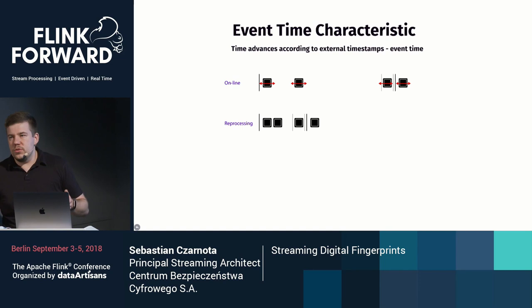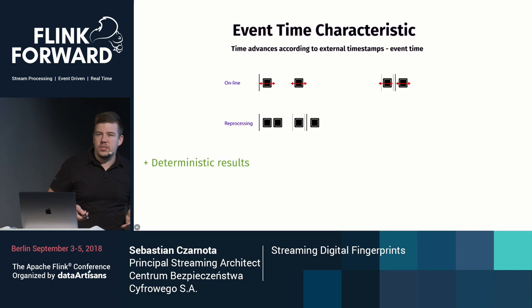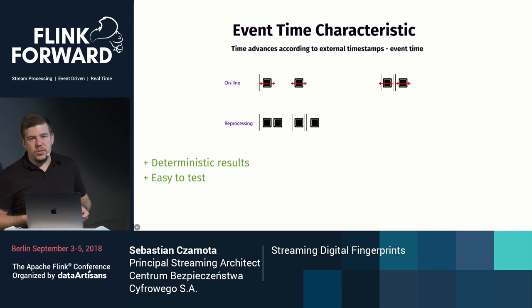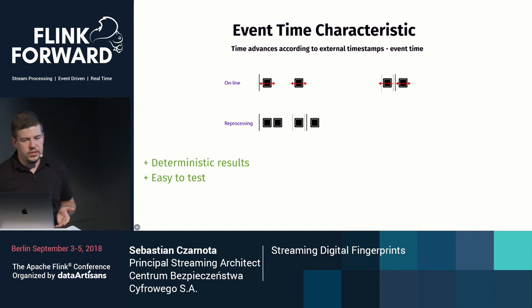Another, probably the most often used time characteristic, is event time. As you can see, event time windows contain the same events whether you're doing online processing or reprocessing — you get deterministic results when using event time. And it's very easy to test because you just put this event time timestamp into your message, so in tests you can put anything there.